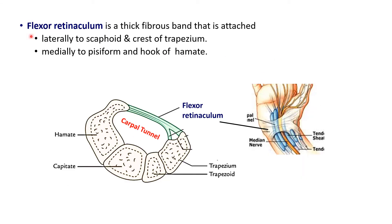Let us see where exactly the flexor retinaculum is attached on the carpal bones. There are in total eight carpal bones arranged in two rows — proximal and distal — each row containing four carpal bones. Flexor retinaculum is attached to the four pillars of the carpal bones, that means the two lateral-most carpal bones in the proximal and distal row. Laterally it is attached to the scaphoid bone in the proximal row and crest of trapezium in the distal row. On the medial side it is attached to pisiform bone in the proximal row and hook of hamate in the distal row.